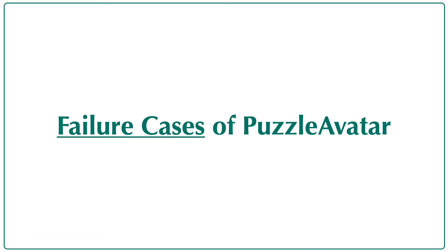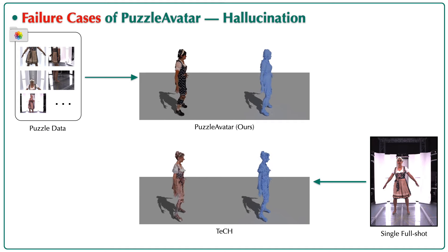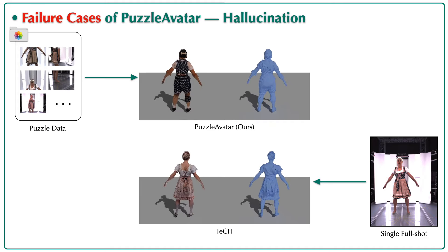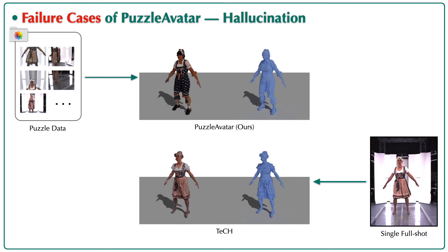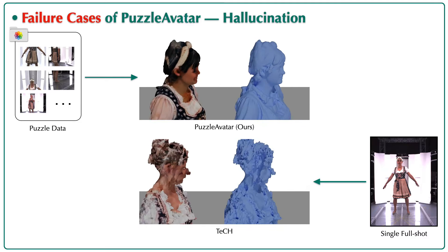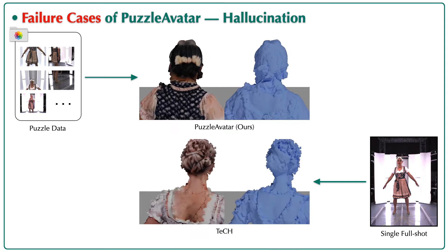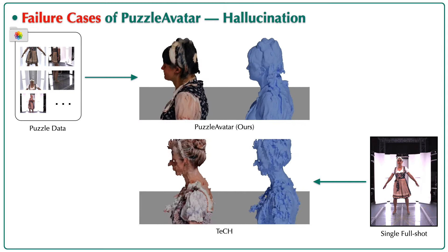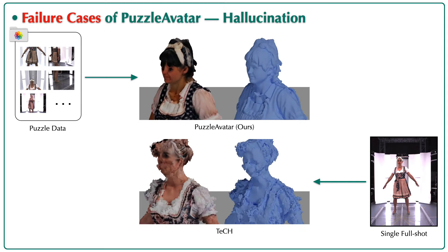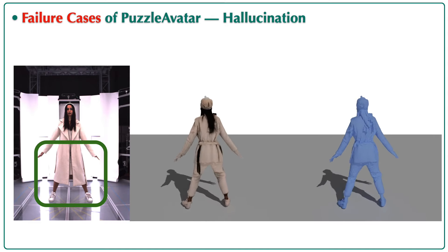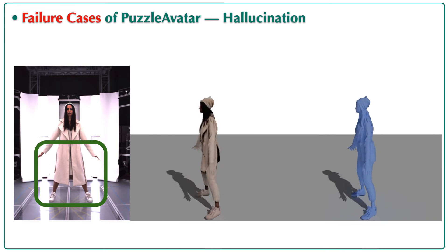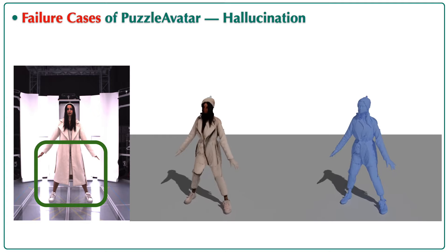Finally, let's take a look at the failure cases of Puzzle Avatar. Puzzle Avatar may fail in preserving identity due to hallucination of Puzzle Booth; however, its outcome still appears realistic. Hallucinations can occasionally result in incorrect garment types — here we show an example where a long coat is changed to a short coat by mistake.